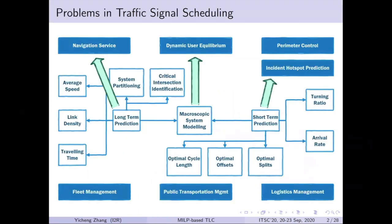As we know, traffic congestion is a key challenge in most cities around the world, and it leads to billions of dollars in losses every year. Besides upgrading the costly infrastructure, a renovated traffic signal scheduling scheme is vital and more affordable to smooth the traffic movement in urban areas in order to alleviate traffic congestion.